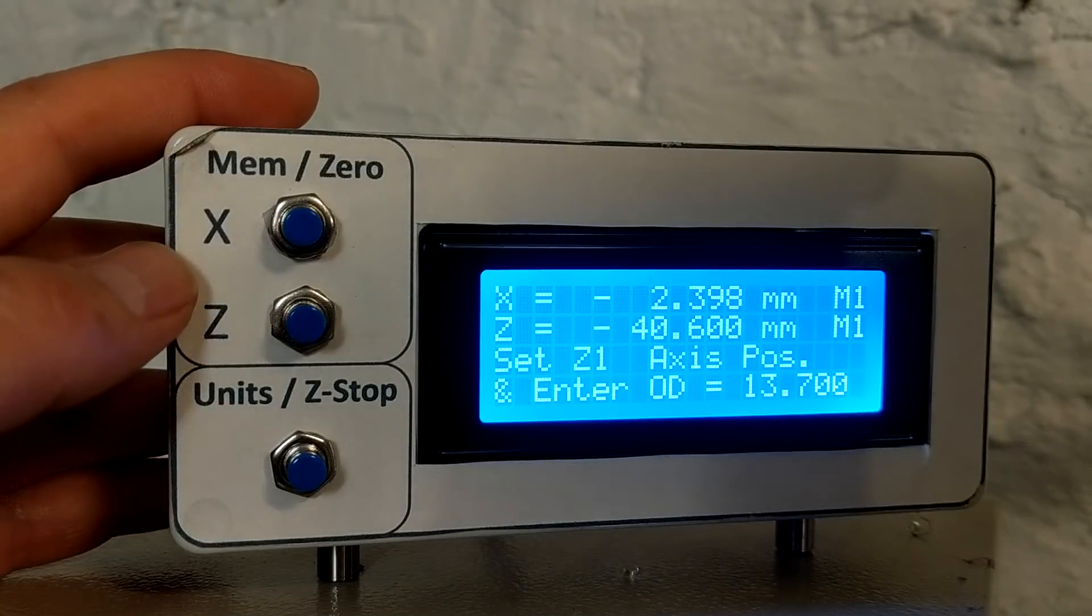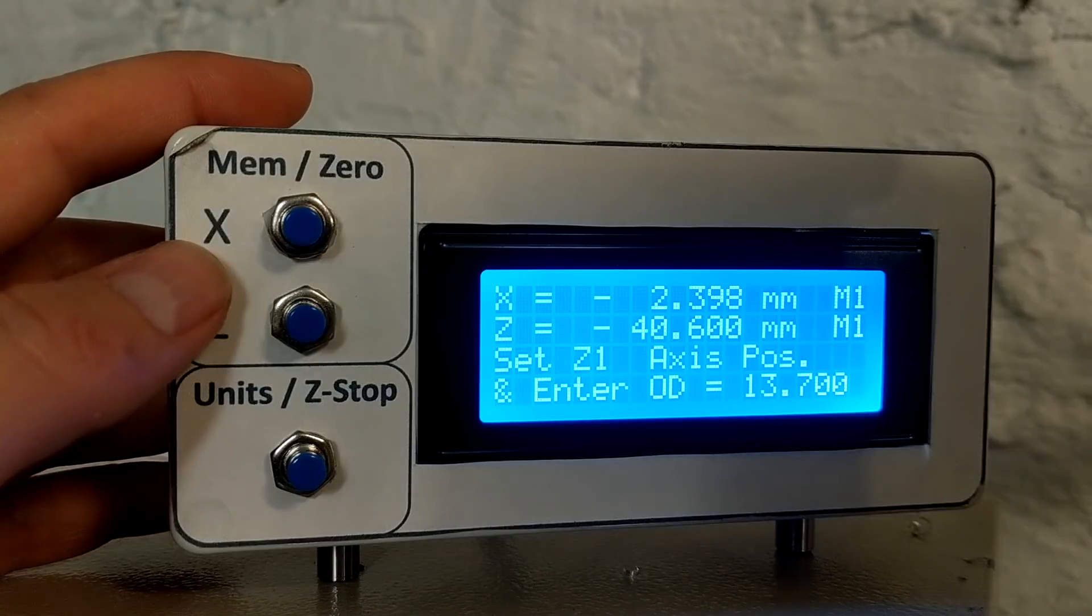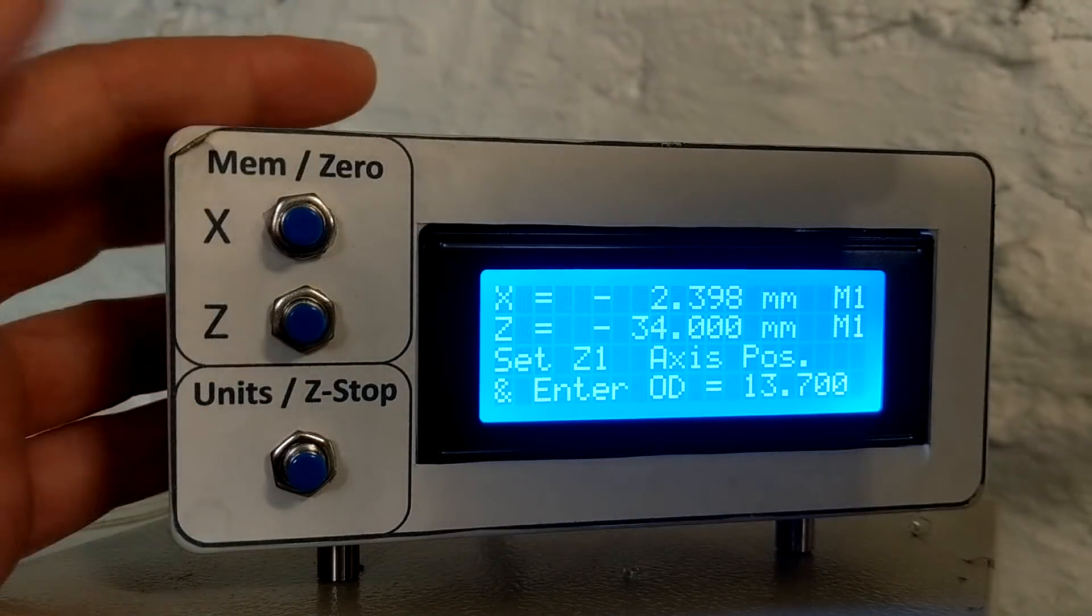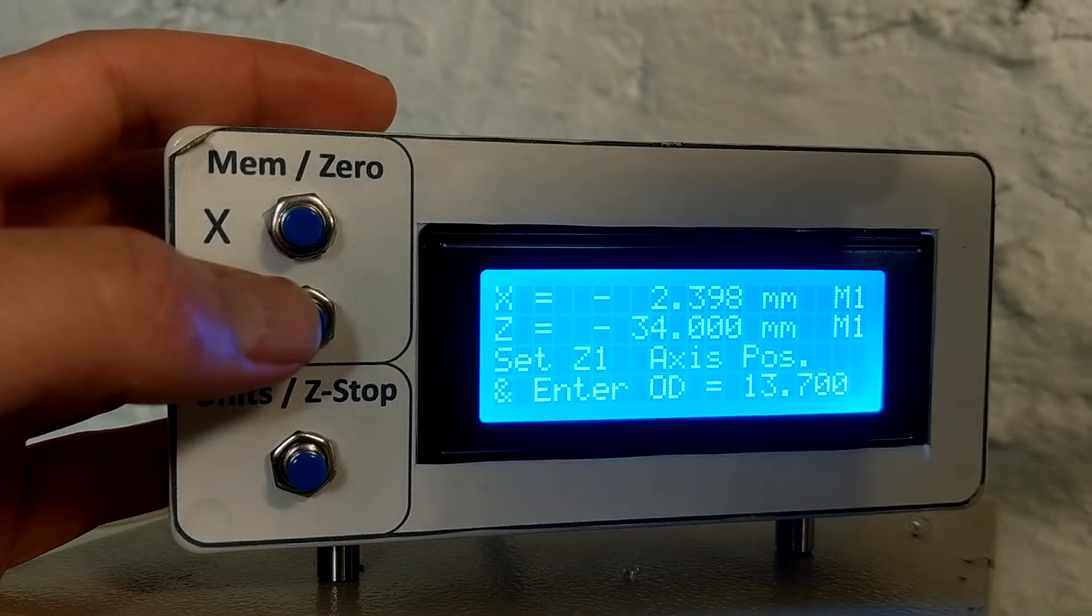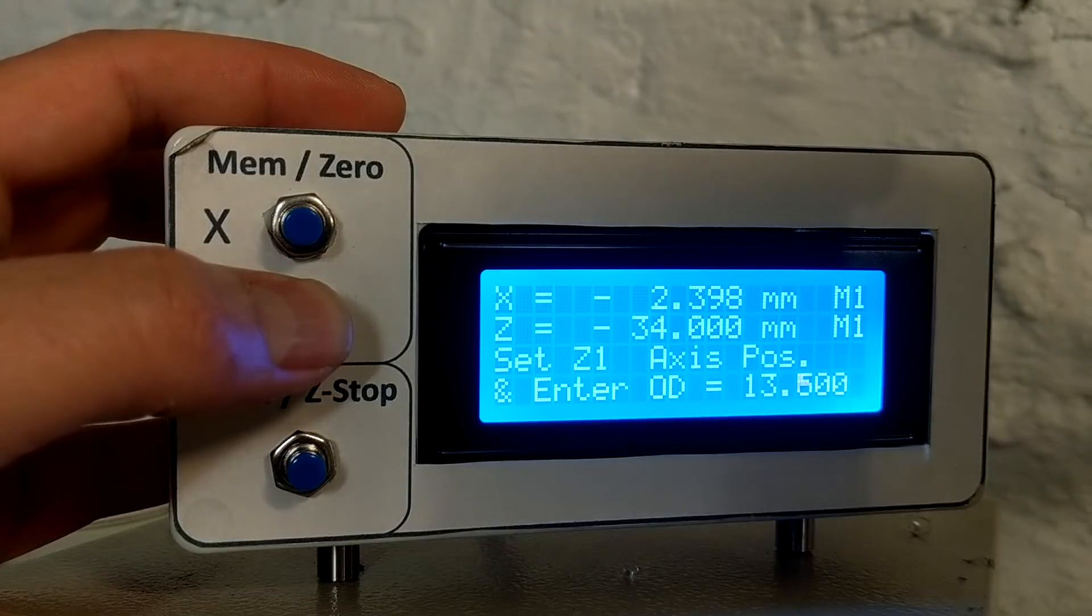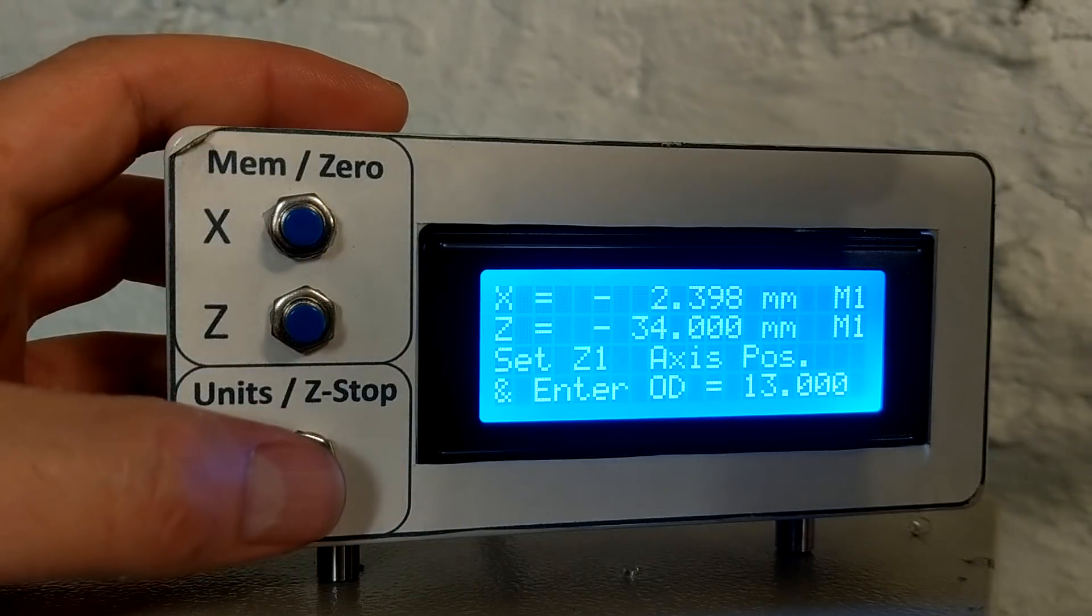And it's asking now for the point numbers. So we have Z1 as our first point. We have to move the carriage to the position. So this point is at 34 millimeters. And the Z. And then we choose the diameter with the controls. Again, with the buttons. And this diameter is going to be at 13 millimeters. Okay, so we'll accept.